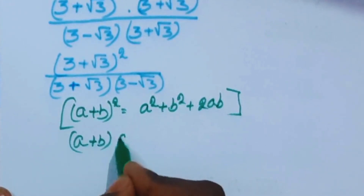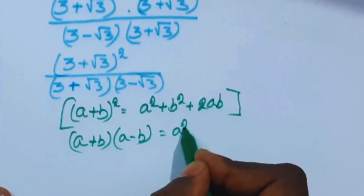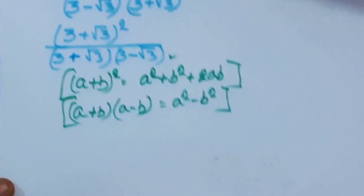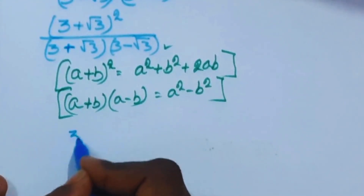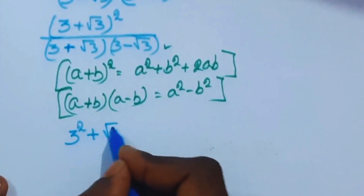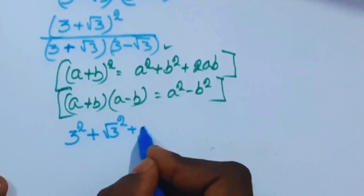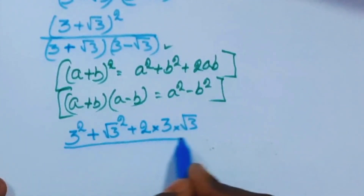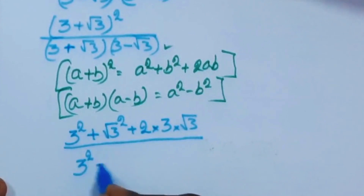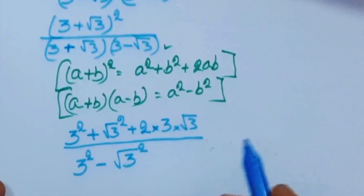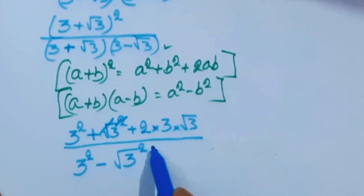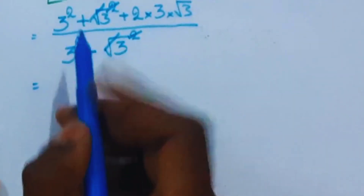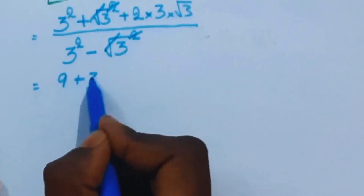Using the formula (a+b)(a-b) equals a squared minus b squared, we are going to implement this here. So we'll get 3 squared plus 2 times 3 times square root of 3, plus square root of 3 squared, divided by 3 squared minus square root of 3 squared. The squares and square roots cancel each other.